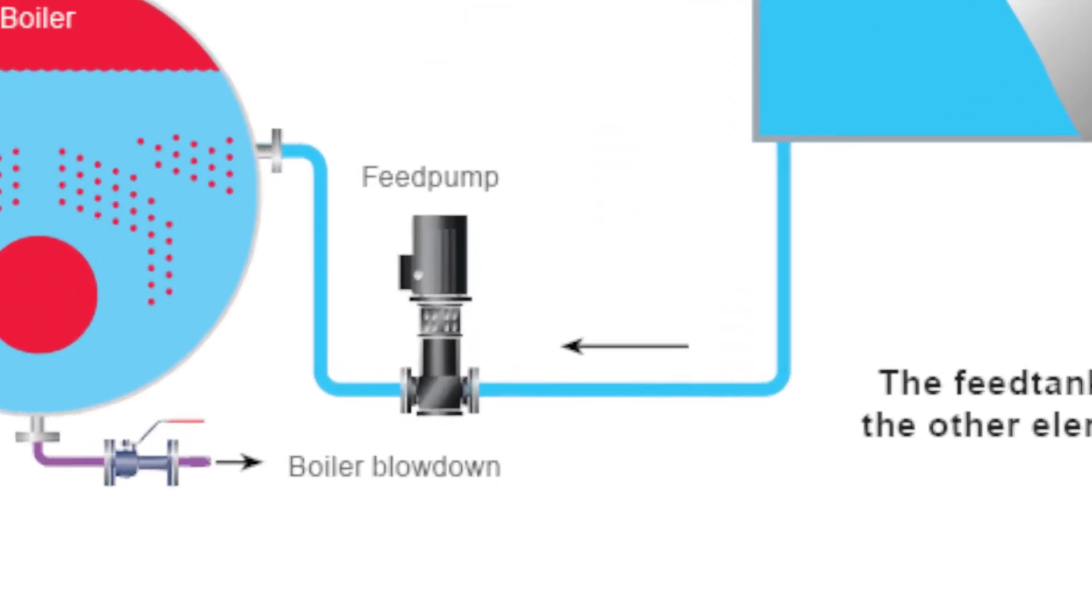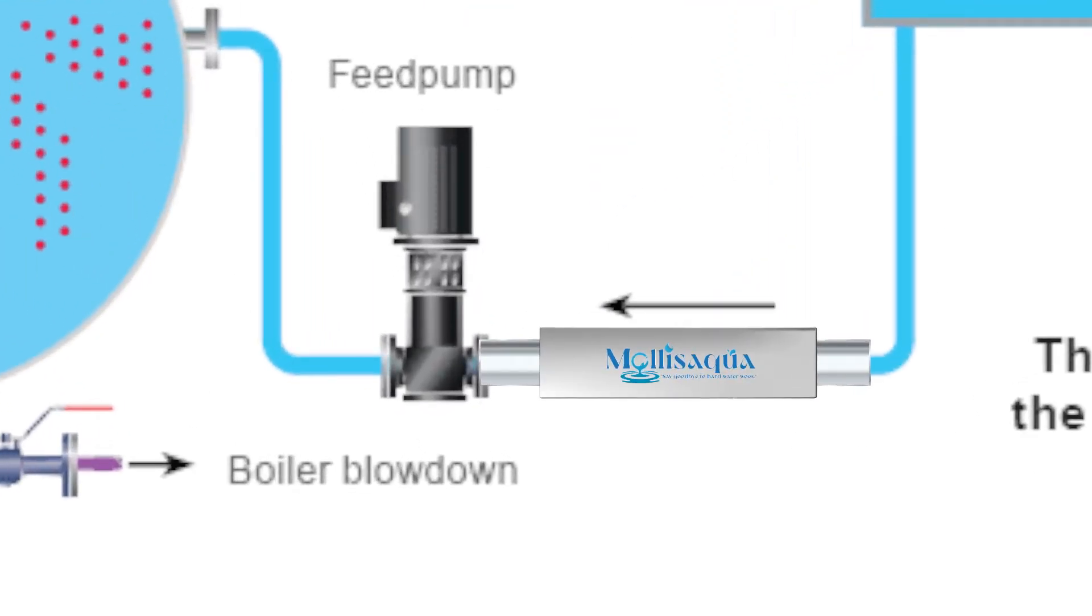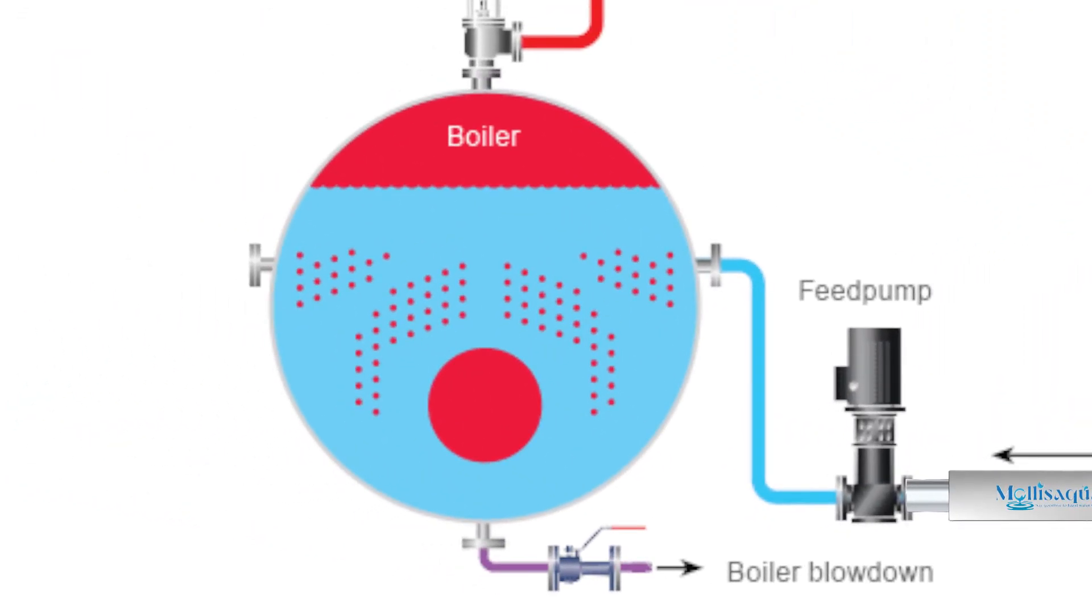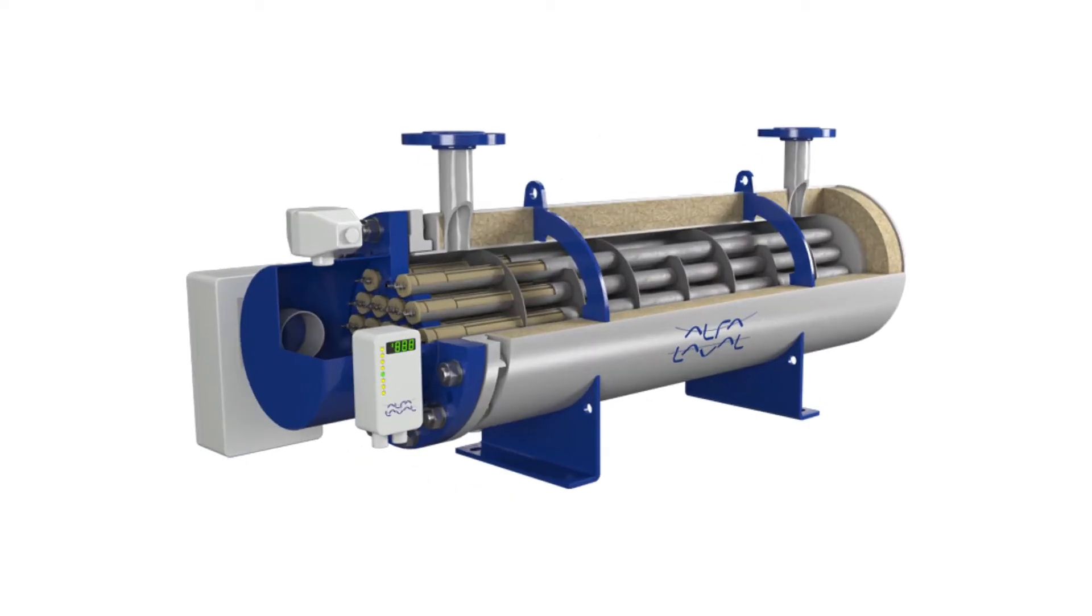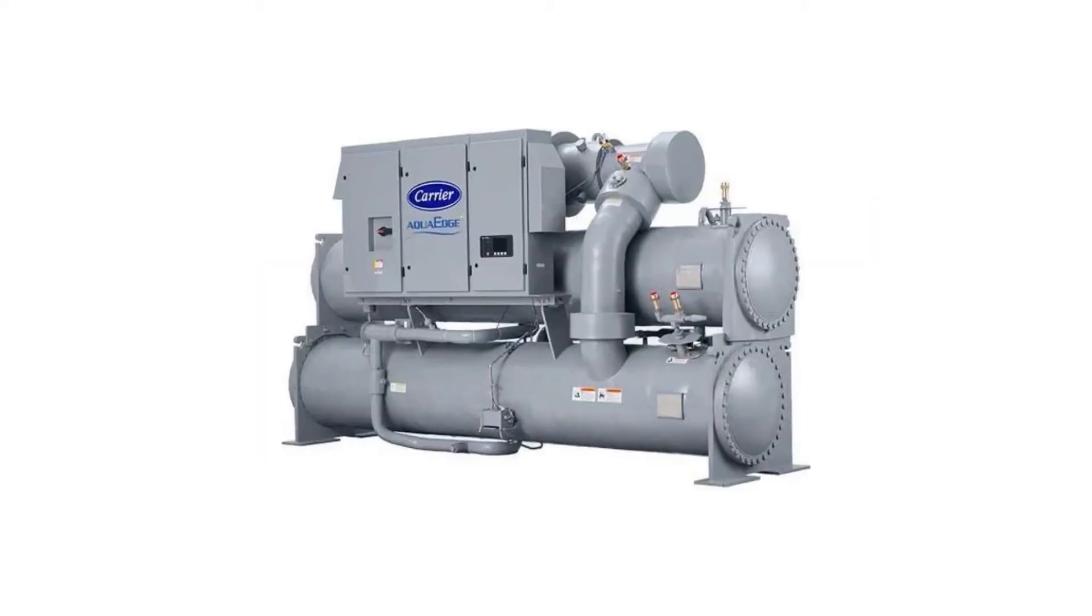In boilers, Mali's Aqua is placed in the feed line, preventing scaling and corrosion, thereby eliminating the need for pH boosters or scaling chemicals. For recirculation systems like condensers, heat exchangers, and chillers, Mali's Aqua reduces maintenance costs.